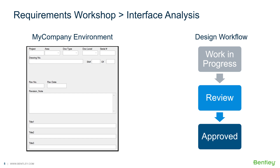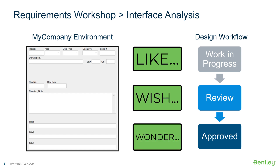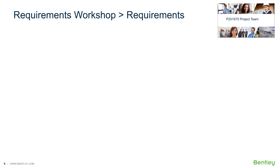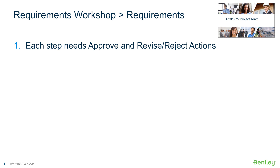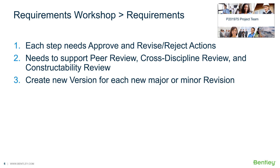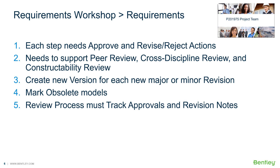The BIM manager and ProjectWise administrator asked the project team during the requirements workshop what they liked about the current setup, what they wished it could do, and what they wondered it could do given the new State DOT requirements. By the end of the requirements workshop, the BIM manager had a list of five requirements: each step needs approve, revise, and reject actions; the process needs to support peer review, cross-discipline review, and constructability review; the team needs to create a new version for each major or minor revision; mark obsolete models; and the review process must track approvals and revision notes.